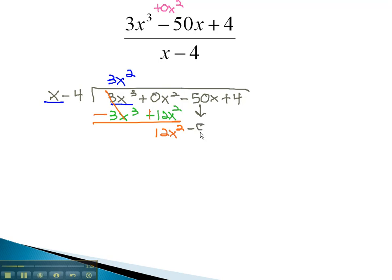Bringing down the negative 50x will allow us to repeat the process. Dividing 12x squared, dividing out an x will give us plus 12x. Multiplying the 12 by each of the terms will give us 12x squared, minus 48x. Again, we change the signs, so we can combine to get negative 2x.